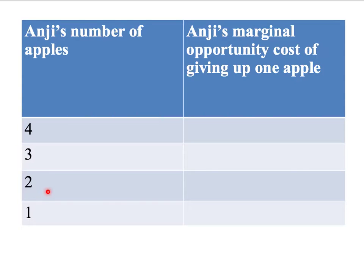What's her marginal cost of giving up a second apple when she's already given up the first apple? What's her marginal opportunity cost of giving up a third apple when she's already given up two apples? And finally, what's her marginal opportunity cost of giving up the last apple when she's already given away her other three apples?